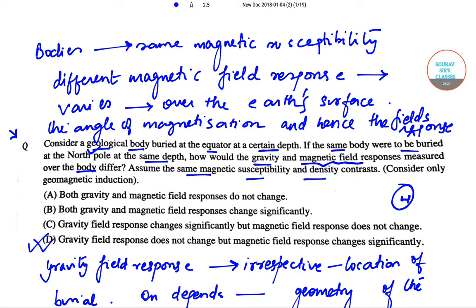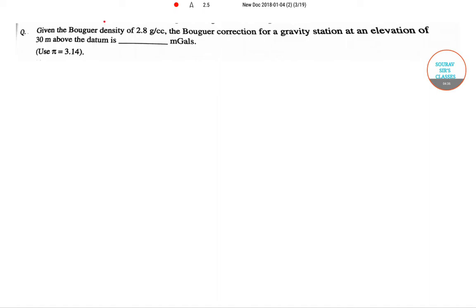Moving on to the next question. The next question says given the Bouguer density of 2.8, the Bouguer correction for gravity station at an elevation of 30 meters above the datum is given by. So we have been provided, so let us rewrite the information.